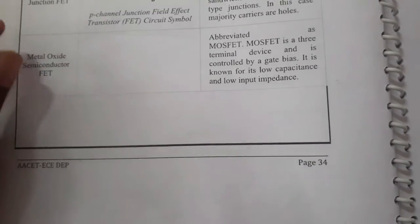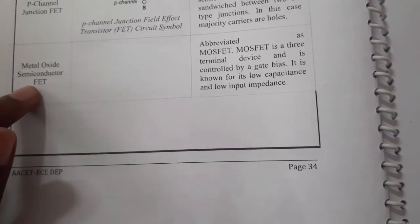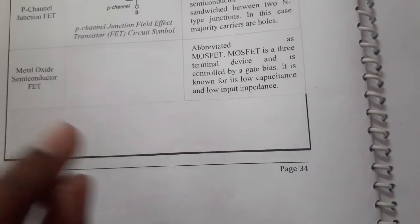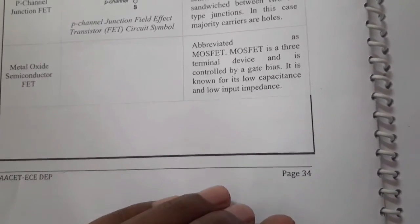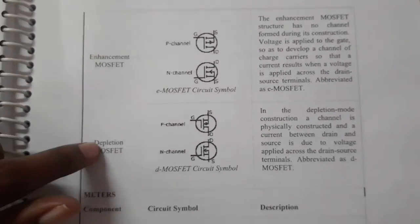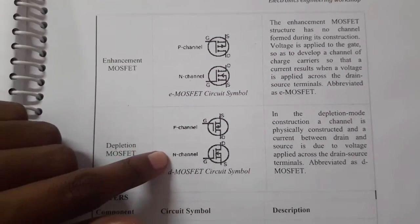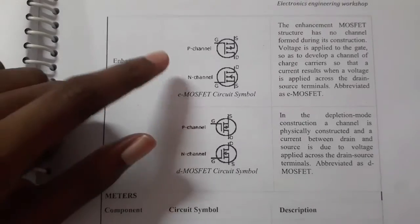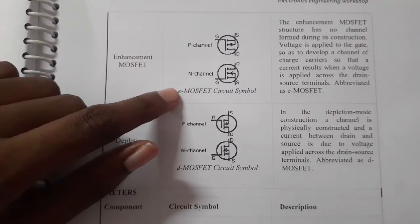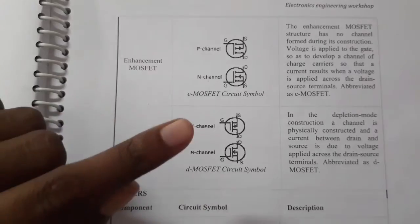Next is MOSFET — Metal Oxide Semiconductor FET. There are three terminals. The types include enhancement MOSFET and depletion MOSFET, available in P-channel and N-channel configurations. The three terminals are source, gate, and drain.